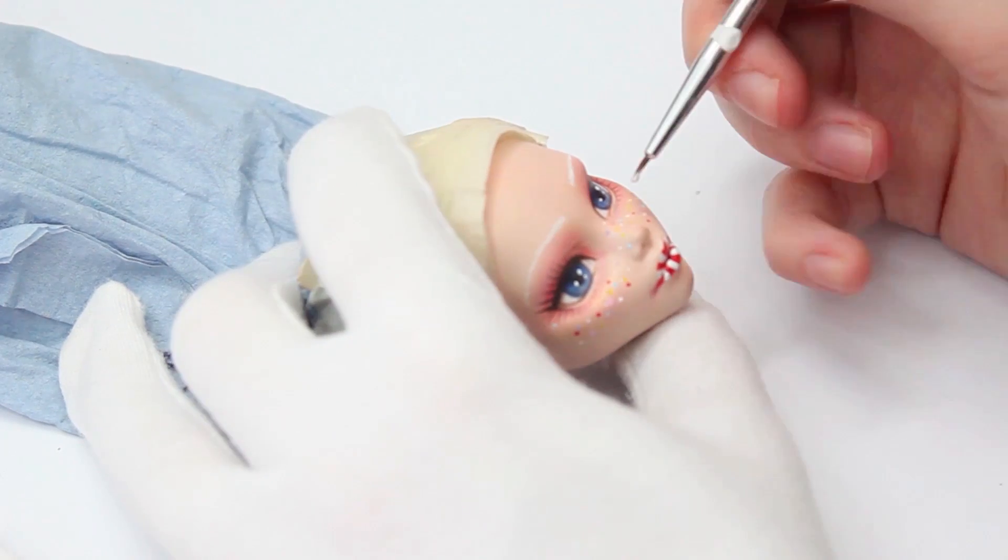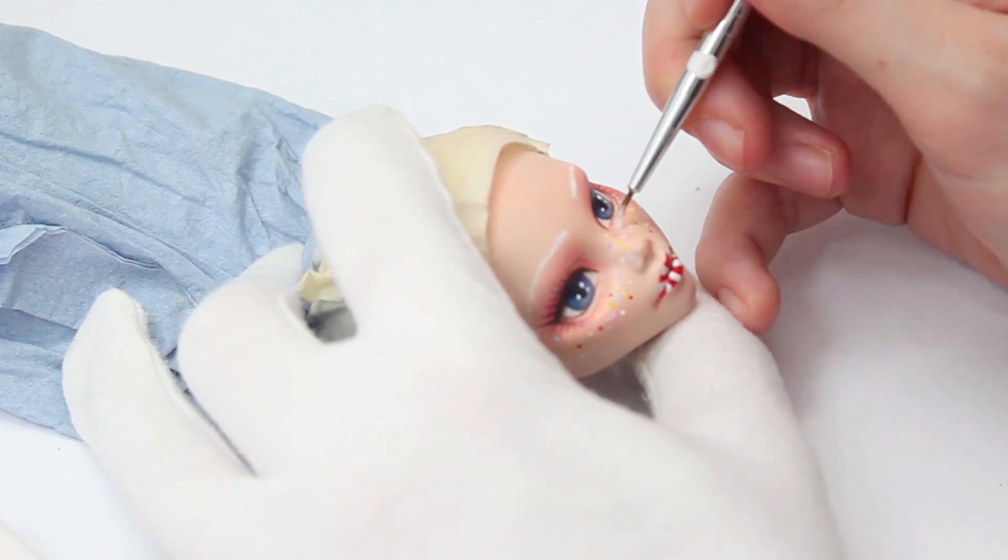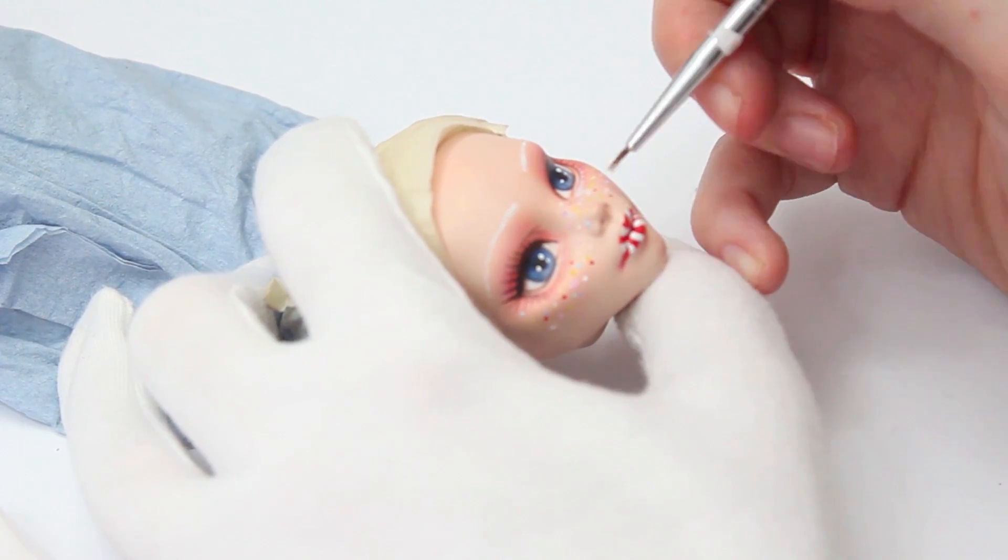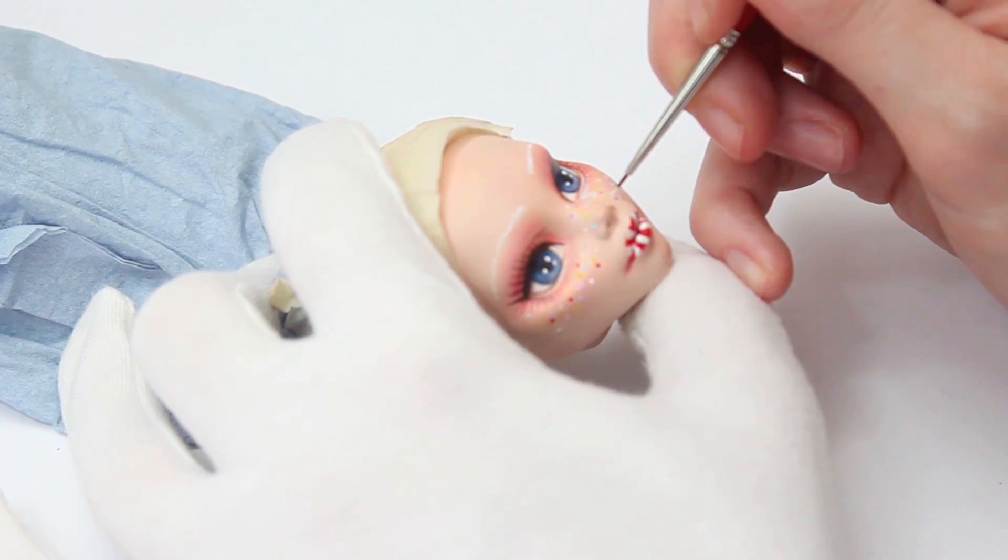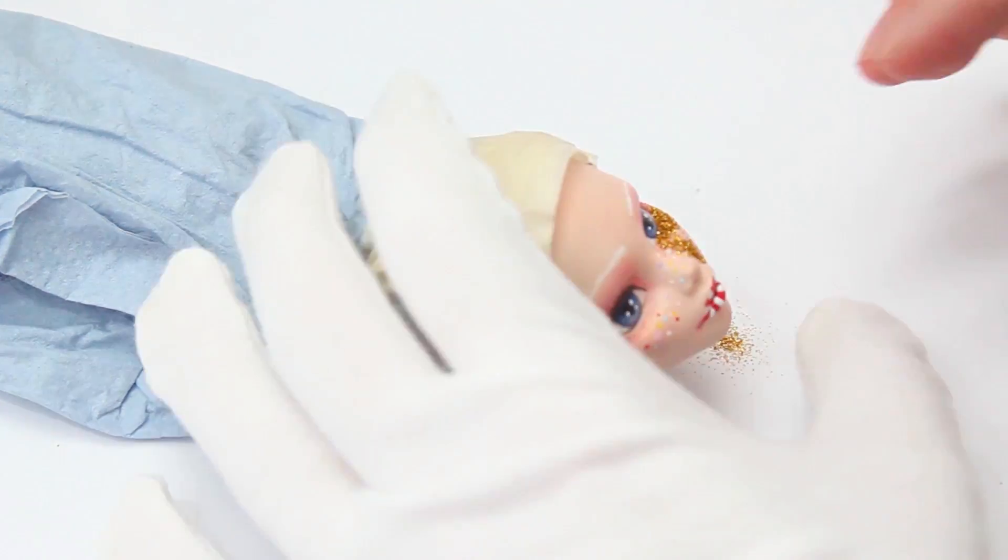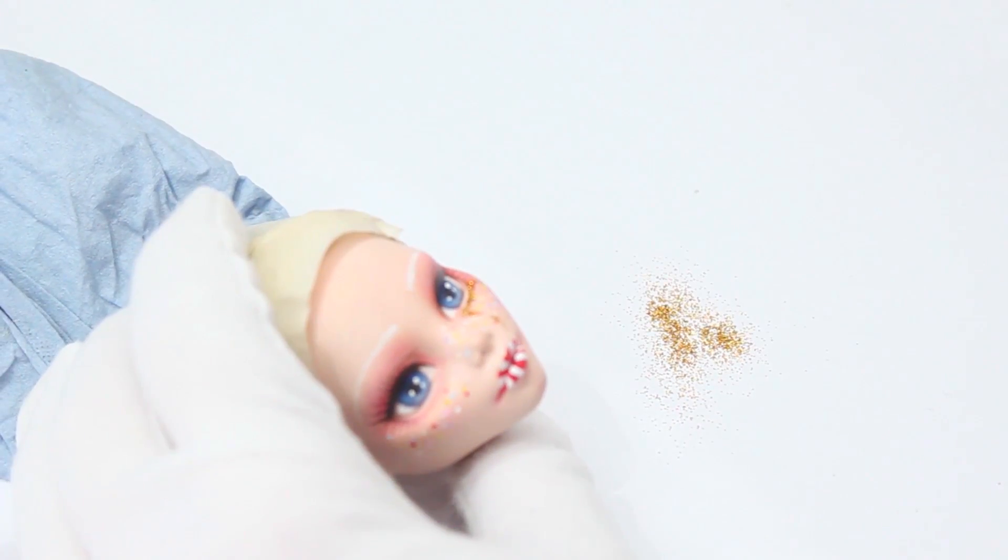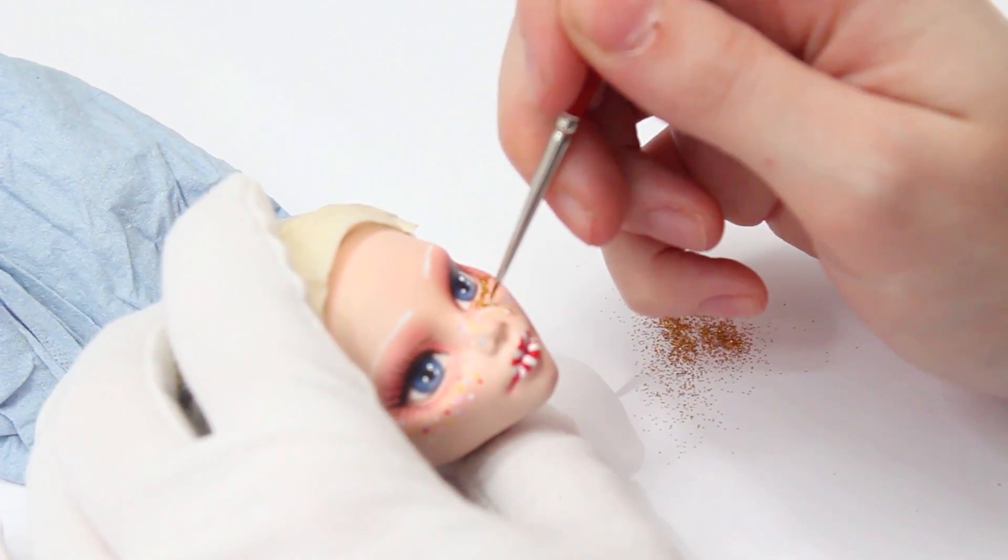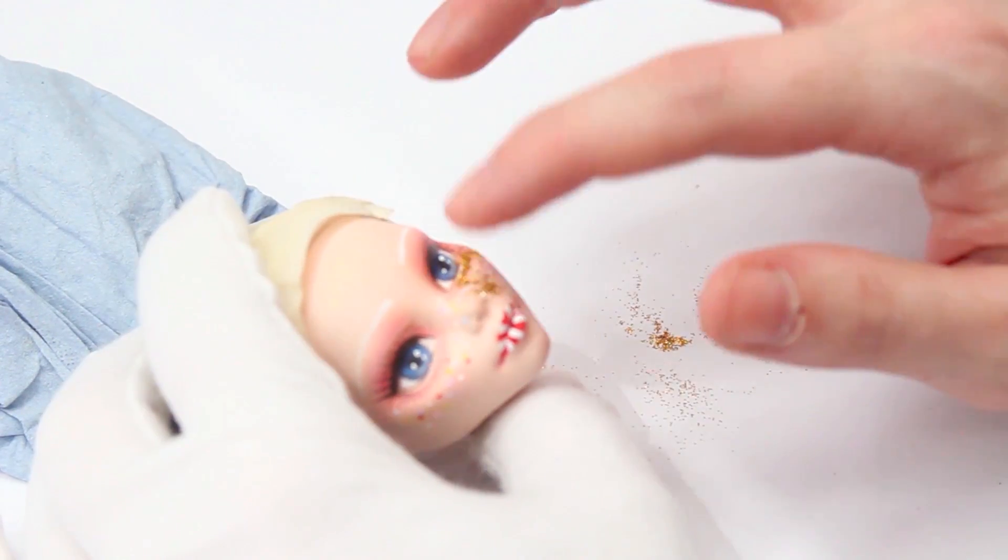To finish up the face-up with the golden tears, I took some PVA glue and kind of painted it on the doll's face in the shape of the tears I wanted to have. Then I used my loose golden glitter and scattered it over the glued areas and shook Guglia's head to get rid of the excess.